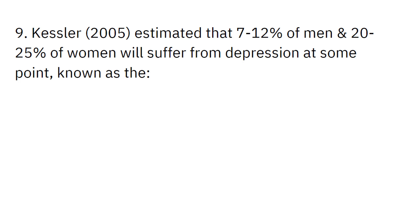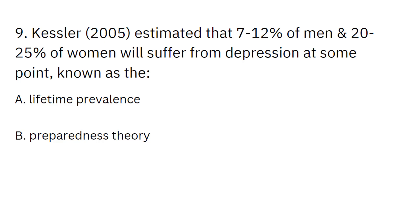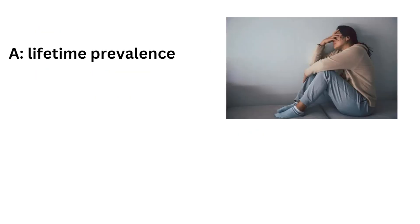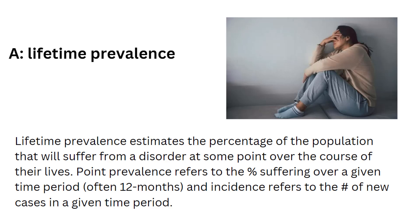Kessler (2005) estimated that 7–12% of men and 20–25% of women will suffer from depression at some point, known as the: lifetime prevalence, preparedness theory, comorbidity, point prevalence, incidence. And this would be A, the lifetime prevalence. Lifetime prevalence estimates the percentage of the population that will suffer from a disorder at some point over the course of their lives. Point prevalence refers to the percentage suffering over a given time period, often 12 months, and incidence refers to the number of new cases in a given time period.